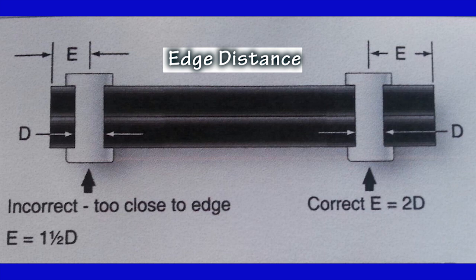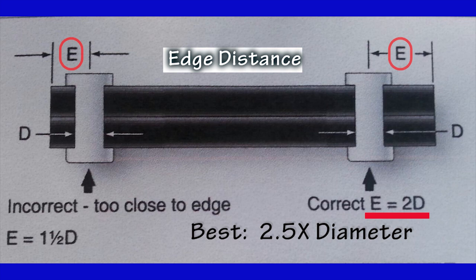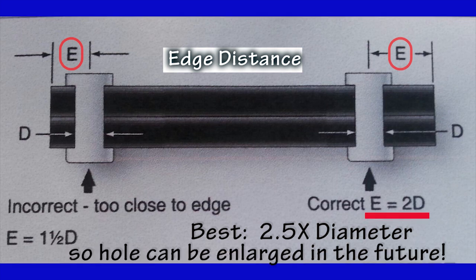Edge distance is the distance from the center of a rivet to the edge of the sheet. This distance should be not less than two times the diameter of the rivet body. And actually, the recommended edge distance is two and a half rivet diameters. The reason for this recommendation is so that the rivet holes can be oversized in the future without violating the edge distance minimum.